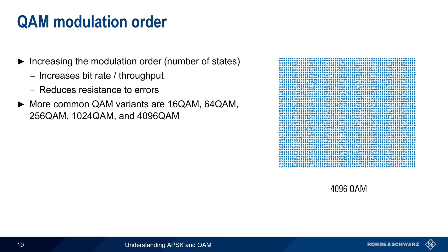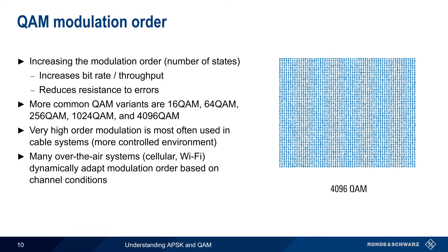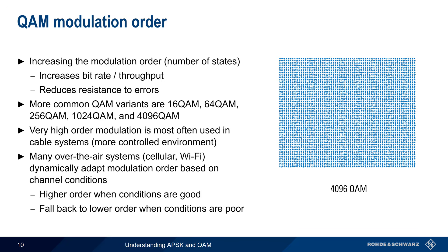Using 4096 QAM as an example, this very high order modulation scheme represents 12 bits with every symbol, so the data rate is quite high. However, we can also see that the constellation points are very close together, so the probability of error is also much higher. Therefore, very high order QAM modulation tends to be used most often in cable systems, where the environment is more controlled and less susceptible to noise and interference. Over-the-air applications, such as cellular technologies or Wi-Fi, often dynamically adapt modulation order based on the channel conditions — for example, using 256 QAM when conditions are good, but falling back to 64 QAM or 16 QAM in the presence of noise, interference, etc.